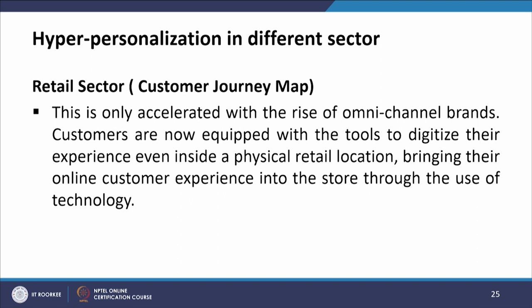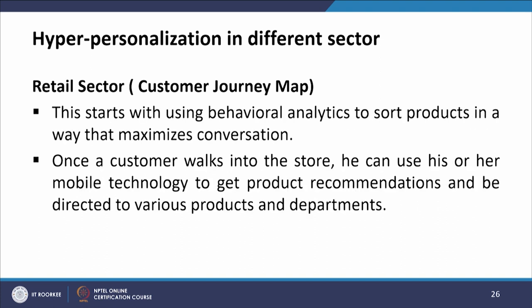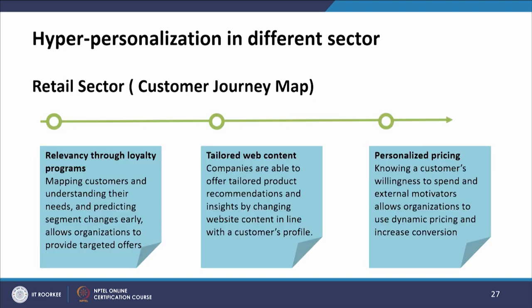This is only accelerated with the rise of omnichannel brands. Customers are now equipped with tools to digitize their experience even inside a physical retail location, bringing their online customer experience into the store through technology. This starts with using behavioral analytics to sort products in a way that maximizes conversion. Once a customer walks into the store, he or she can use mobile technology to get product recommendations and be directed towards various products and departments. With this customer understanding, companies can come up with targeted offers through loyalty programs that map customers and predict segment changes early.